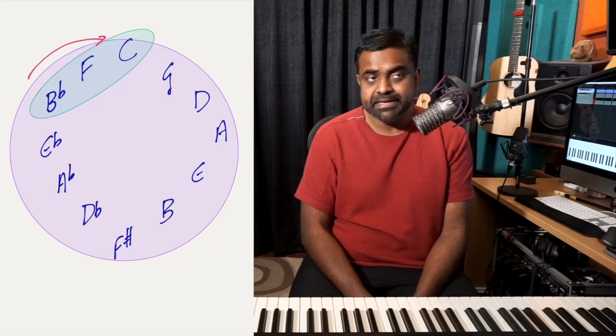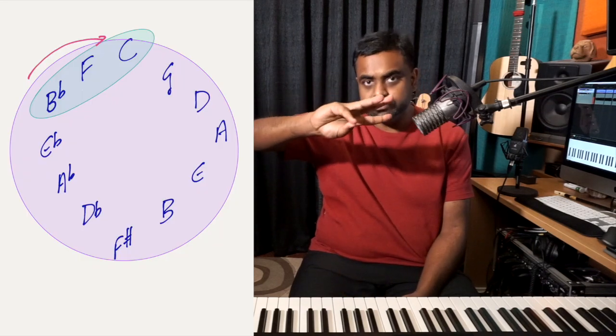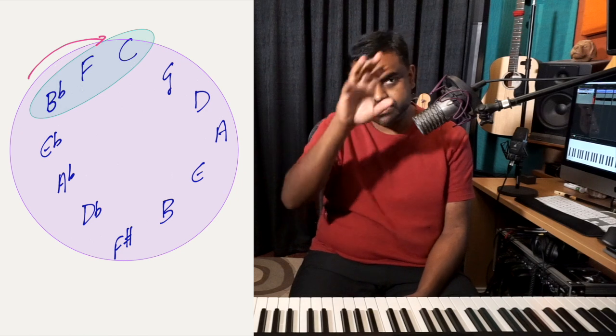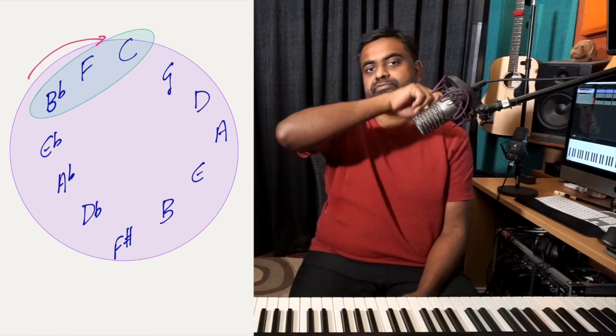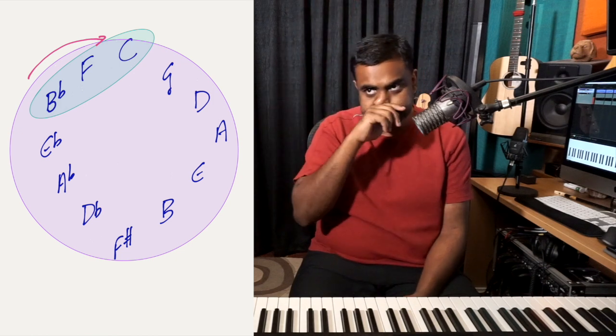So that's your Mixolydian progression or cadence if you will: 7♭, 4, 1. You need to practice this on all keys. And a great way to help you achieve this would be write down the circle of fifths. And then you're going to look at 3 chord groupings in that circle. So the circle when you write it: C, G, D, A, E, B, F♯, D♭, A♭, E♭, B♭, F, C. You write it like that.